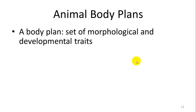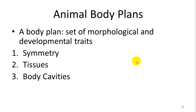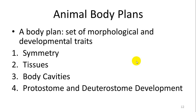Animal body plans refer to the set of morphological and developmental traits. There are four areas we'll discuss: symmetry, tissues, body cavity, and development — specifically protostomes and deuterostomes — as a way to classify animals.